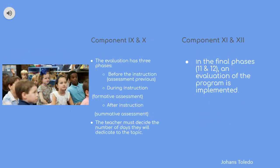Components nine and ten show three facets of evaluation: before instruction — assessed prior knowledge; during instruction — formative assessment; and after instruction — summative assessment. The teacher must decide the number of days dedicated to each topic. Components eleven and twelve are the final phases, where they check and evaluate the program, going through every single process before it is ready to be implemented.